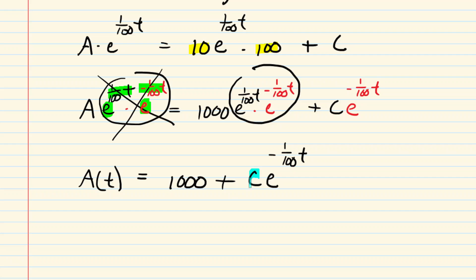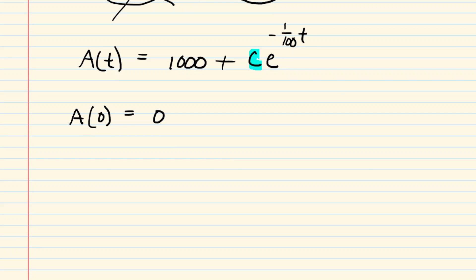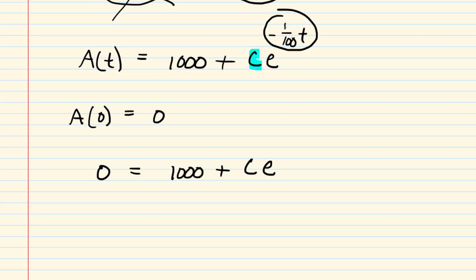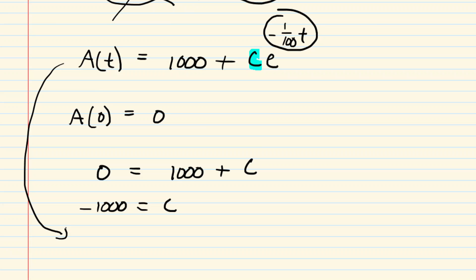We need some initial condition. The question states that at time zero, there are zero pounds of salt — the tank started as pure water. Plugging in A = 0 and T = 0, we get 0 = 1,000 + C times e^0, so 0 = 1,000 + C. Subtracting 1,000 from both sides gives C = -1,000. We rewrite the solution plugging in -1,000 for C, giving A(T) = 1,000 minus 1,000 times e^(-t/100).